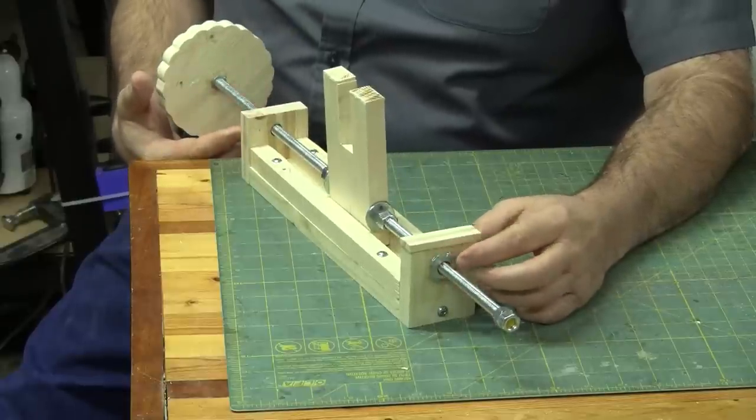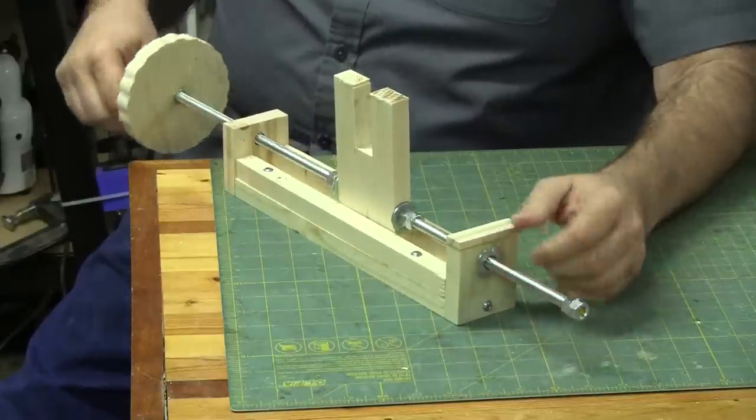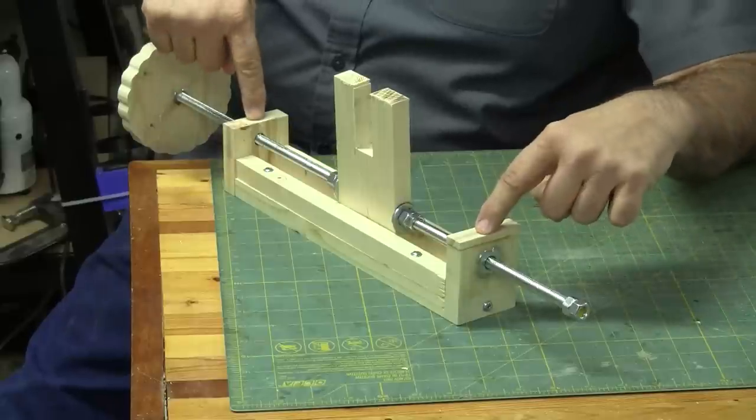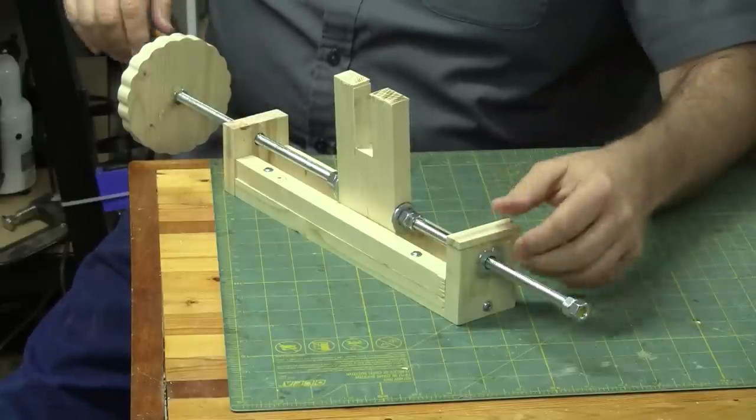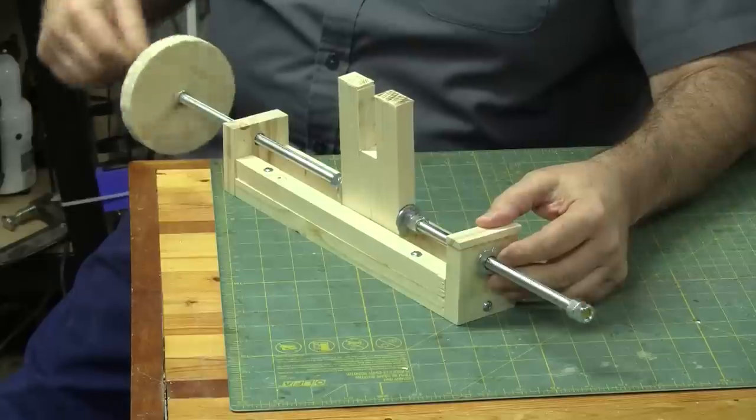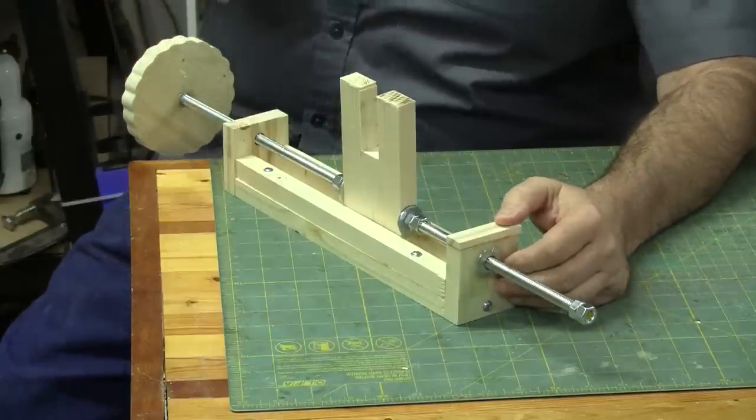So the lead screw is actually turning between this point and this point in a nut in each end, and that keeps everything nice and straight and able to move left and right. So it's really just that simple.